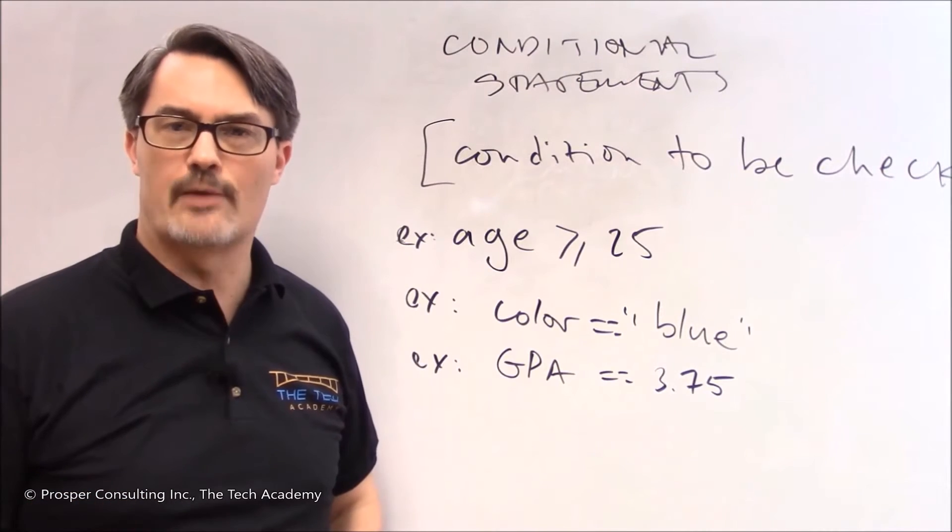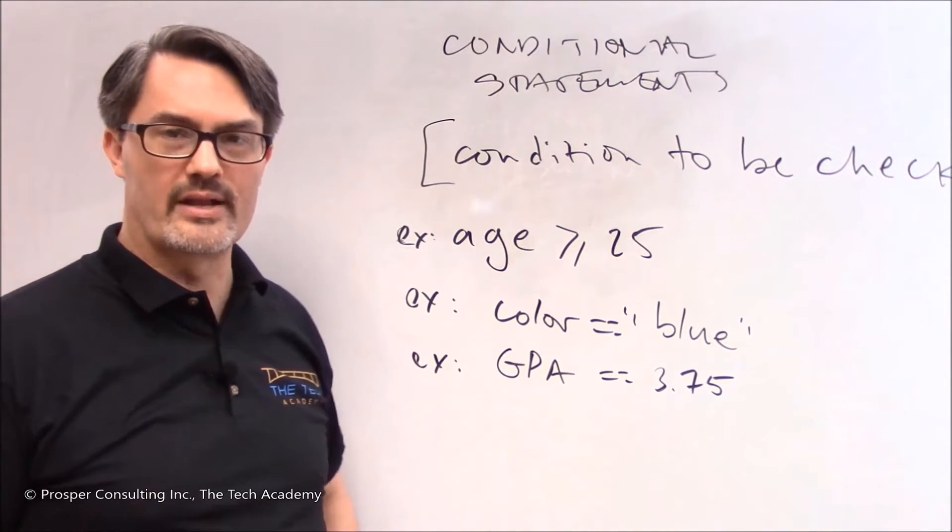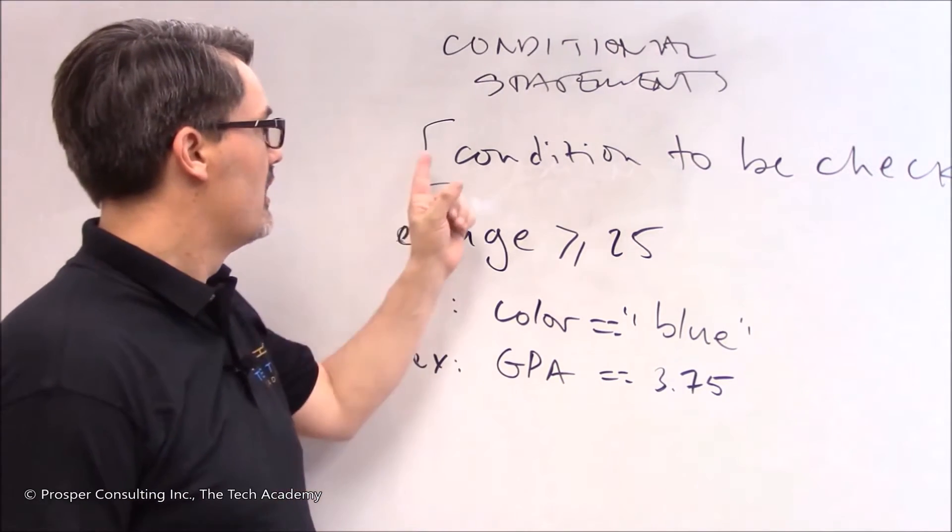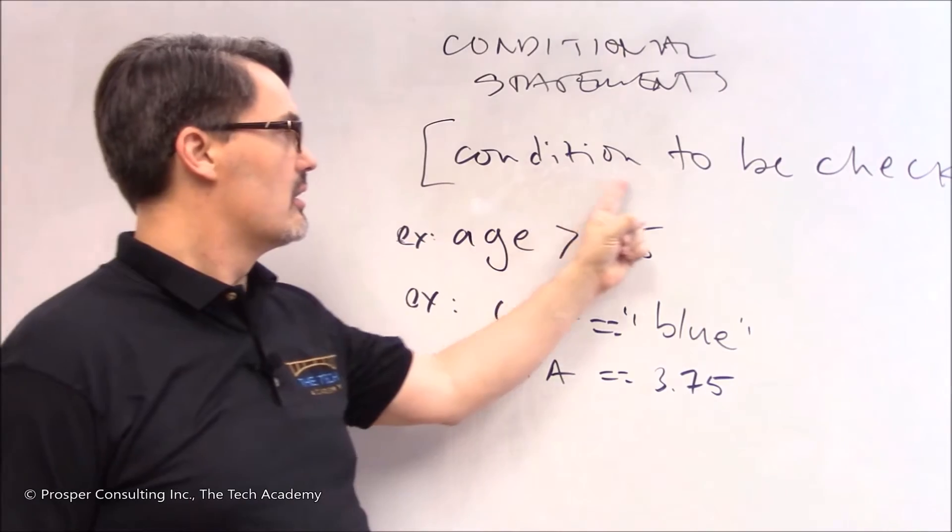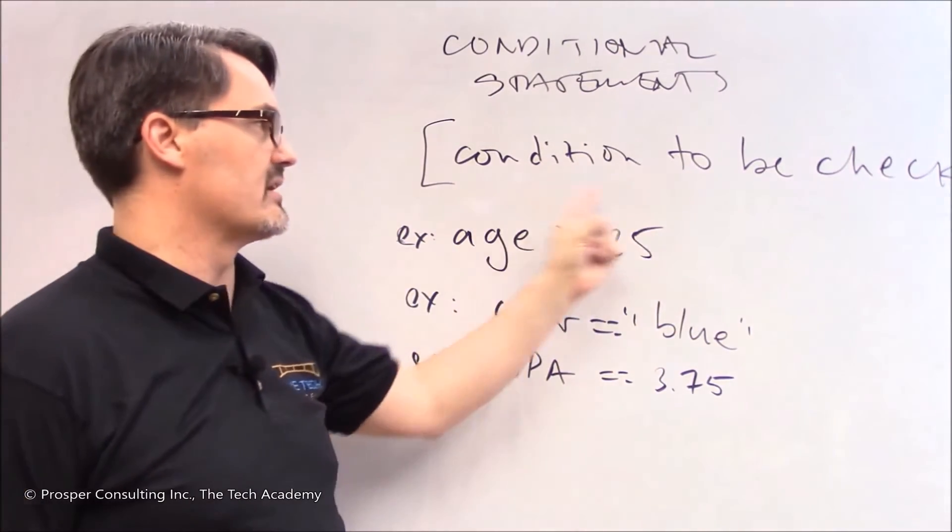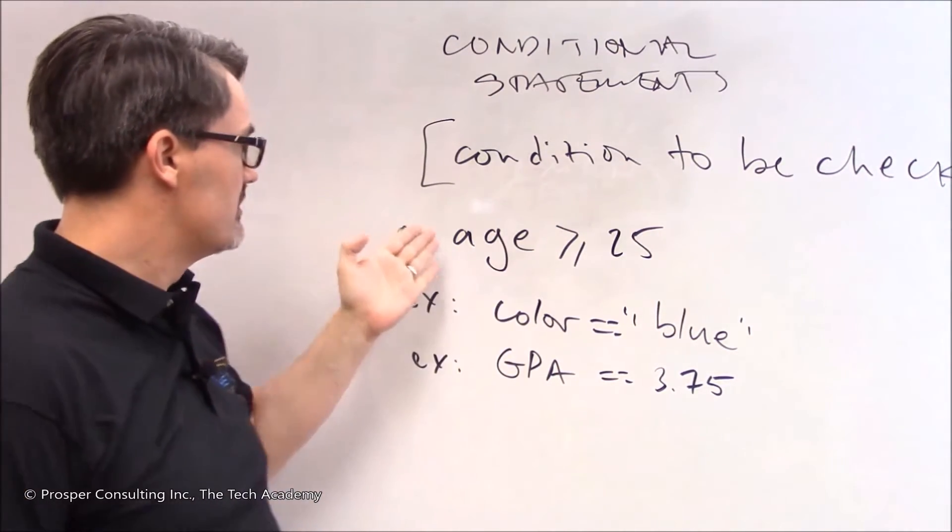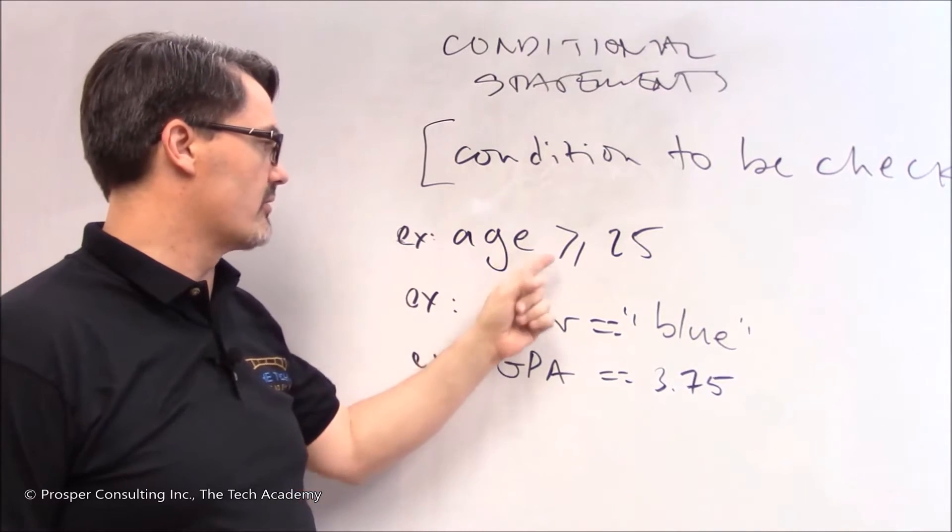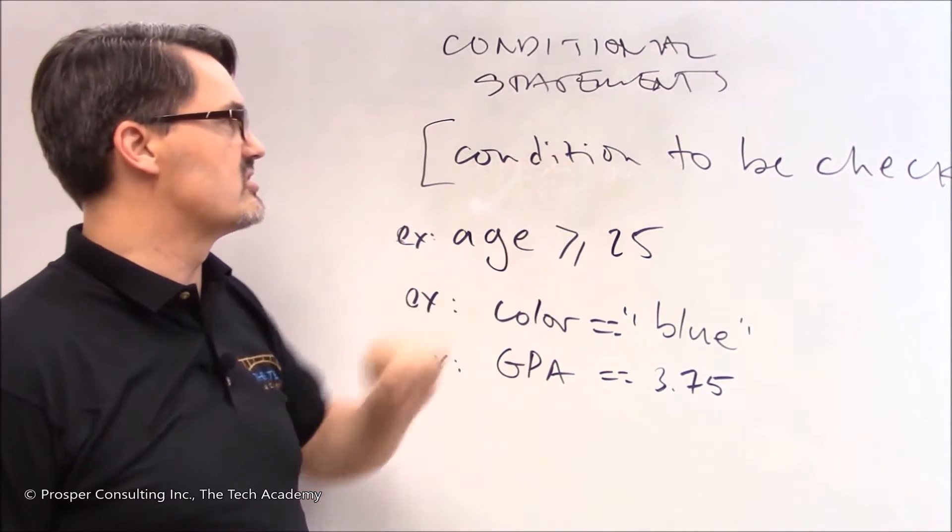Here are some examples of conditional statements. Conditional statements are written in the following format. As one statement, the condition to be checked is written down. Here's examples. Here, age greater than or equal to 25, we have a condition to be checked. What's the condition to be checked? Is the variable called age having a value that's greater than or equal to 25?